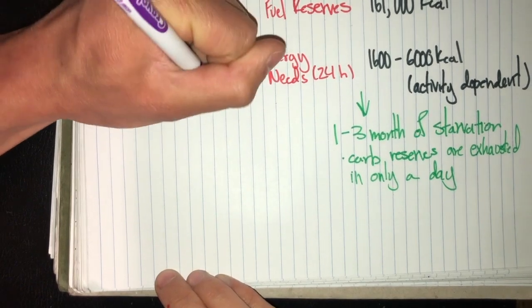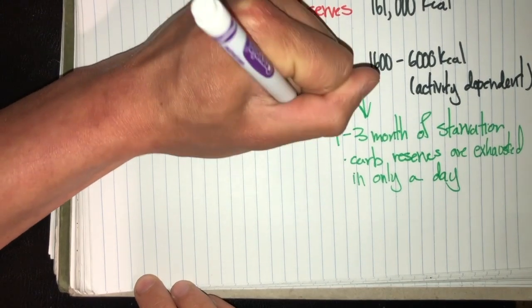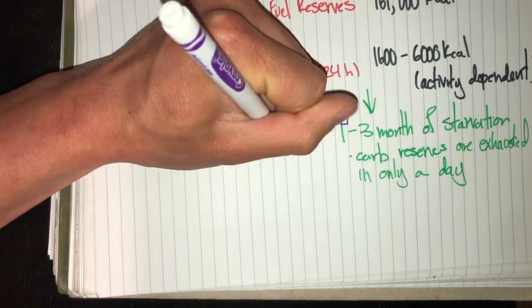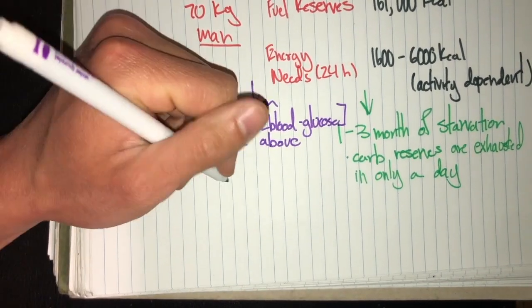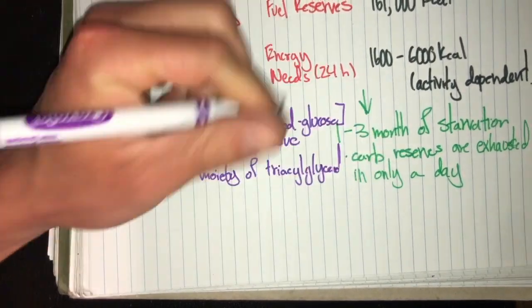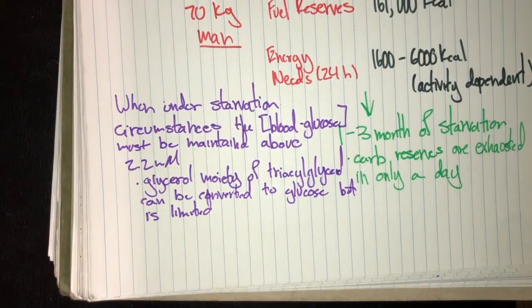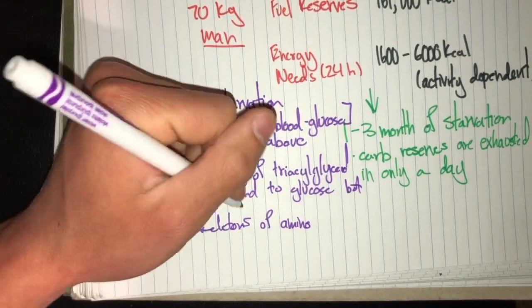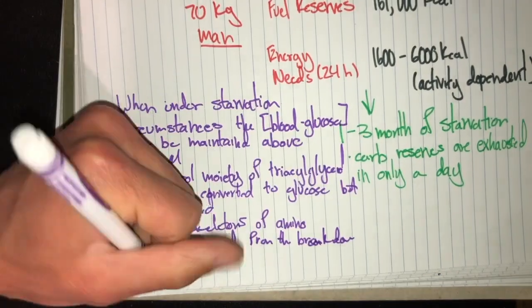When under starvation, the blood glucose concentration must be maintained above 2.2 millimolars. And this glycerol moiety of triacylglycerol can be converted to glucose, but this is a limited source. So carbon skeletons of amino acids derived from the breakdown of proteins can also be used.